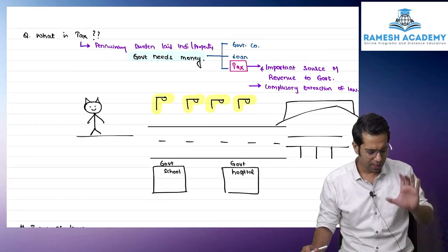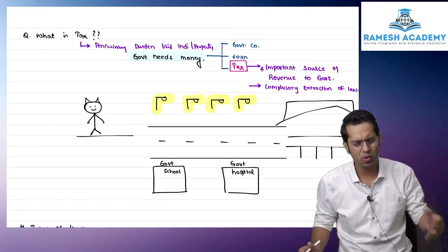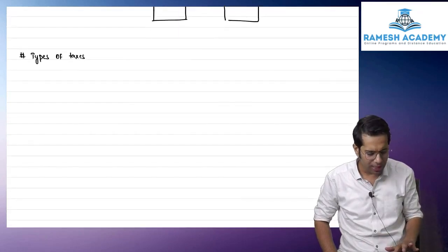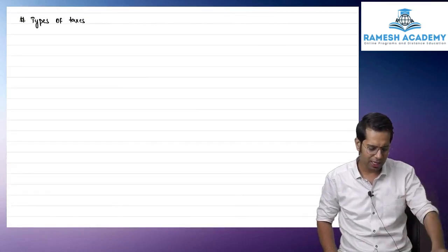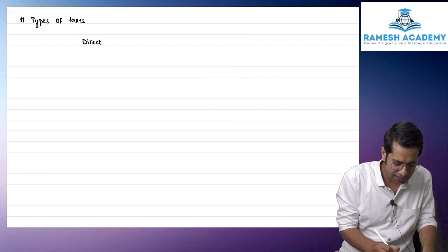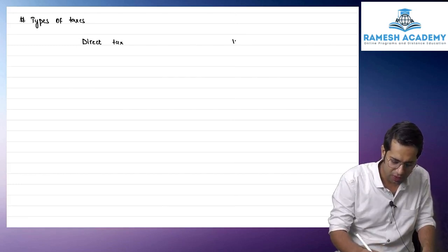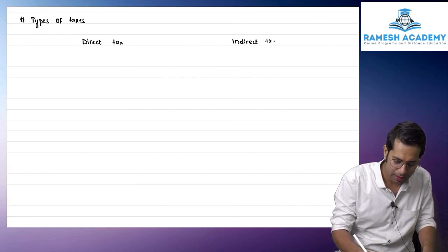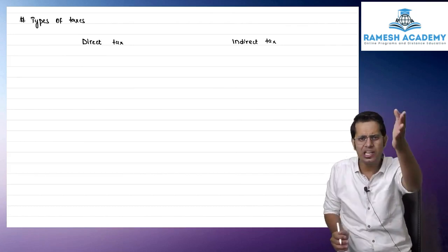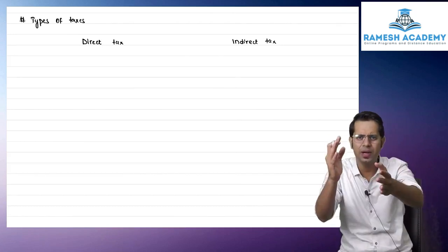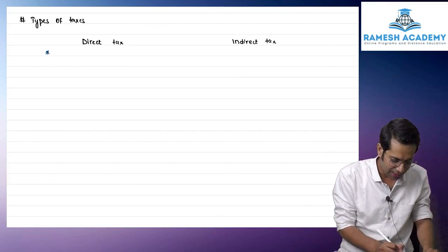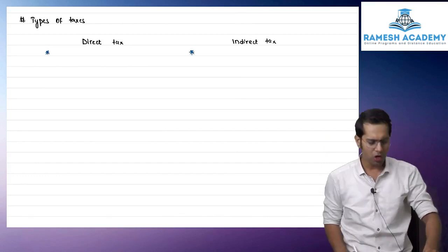Now, how many types of taxes are there? Taxes are basically of two types: one is called direct tax and another is called indirect tax. Direct tax means tax which is directly paid to the government. Indirect tax means tax which is indirectly paid to the government.